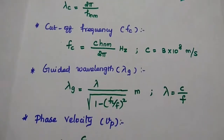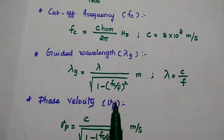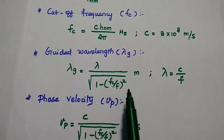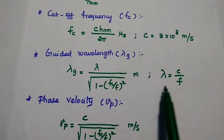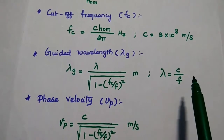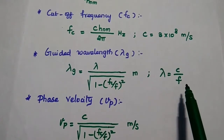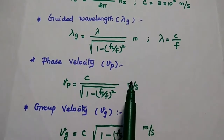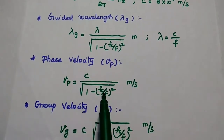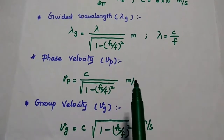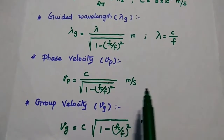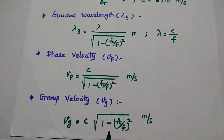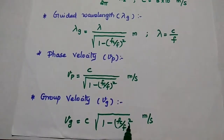The guided wavelength lambda_g is equal to lambda divided by the square root of 1 minus (f_c/f)², in meters, where lambda equals c/f, and f is the operating frequency. The phase velocity v_p equals c divided by the square root of 1 minus (f_c/f)², in meters per second. The group velocity v_g equals c times the square root of 1 minus (f_c/f)².